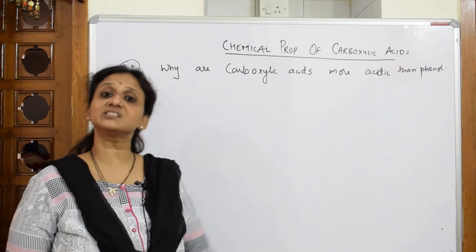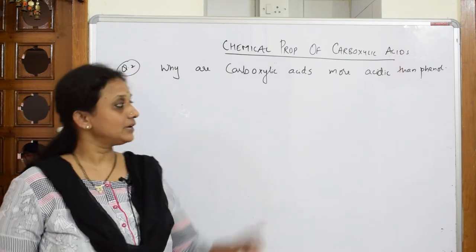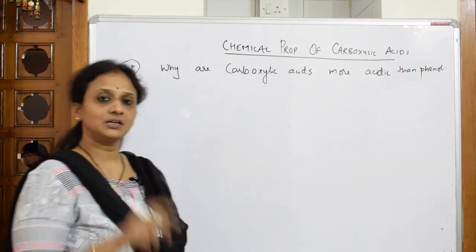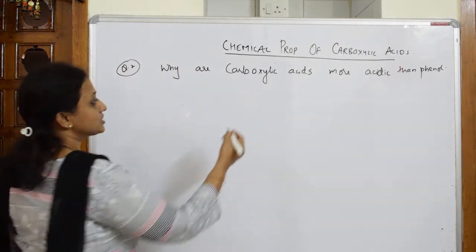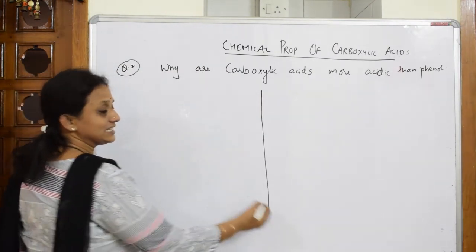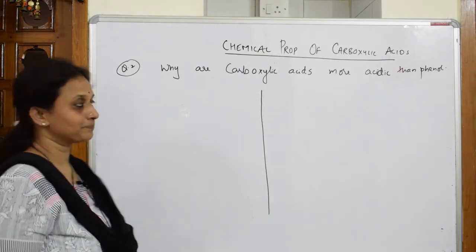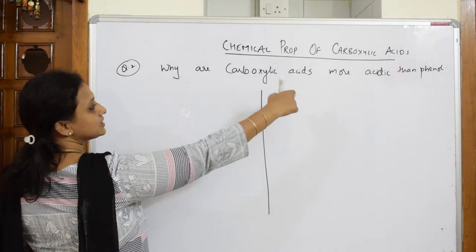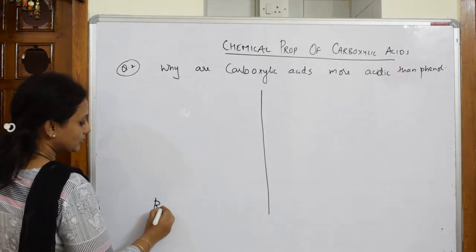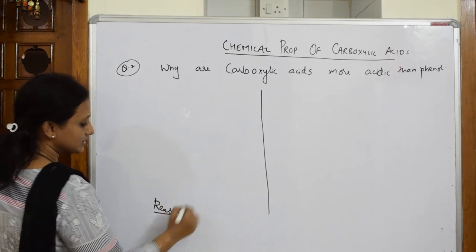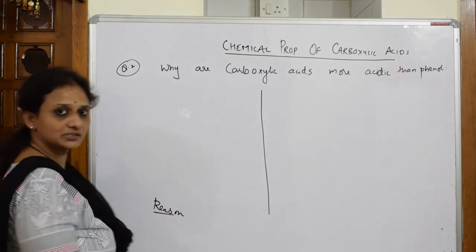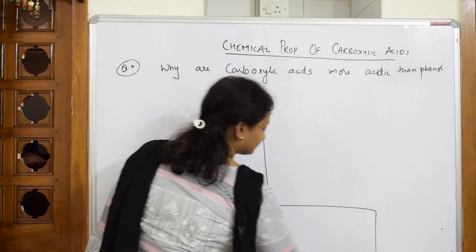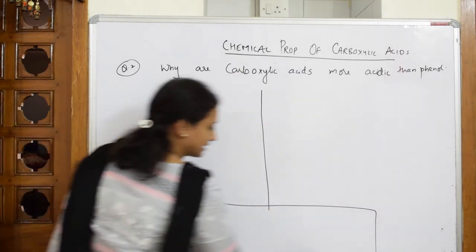When such questions are given to you involving a comparative study, try to divide the page into two — that makes it easy to explain. You have to prove that carboxylic acid is more acidic than phenol. Leave one place for the reason and put that in a box. Now let me start explaining the answer.